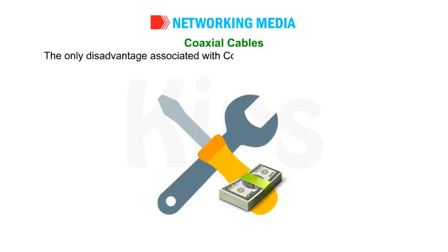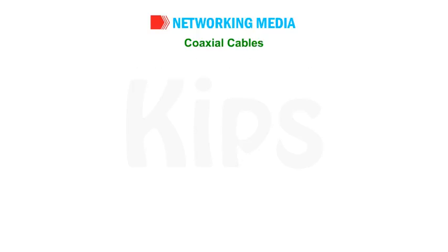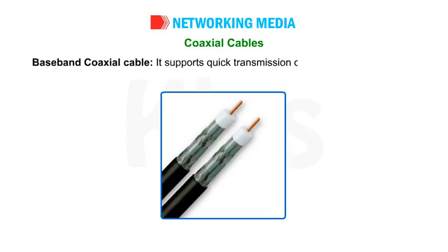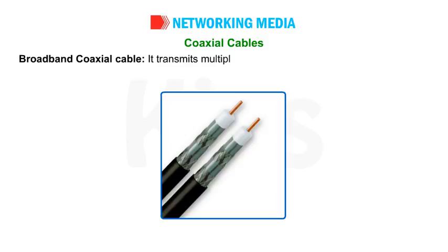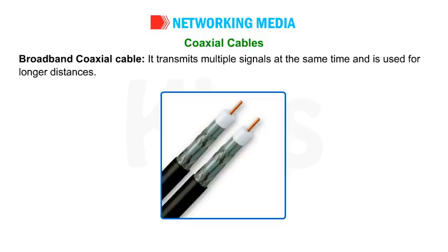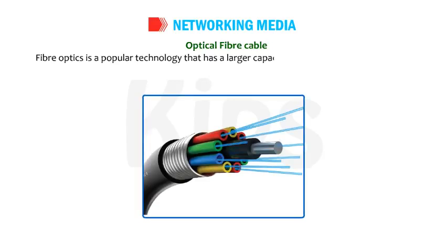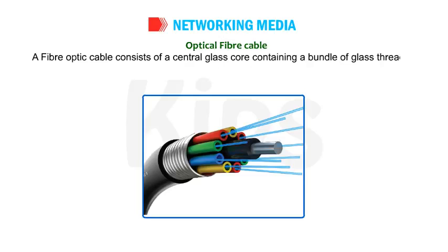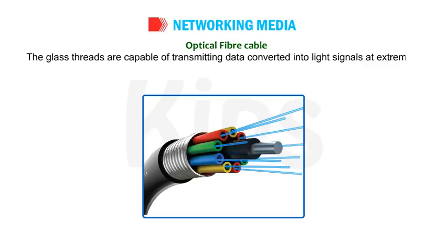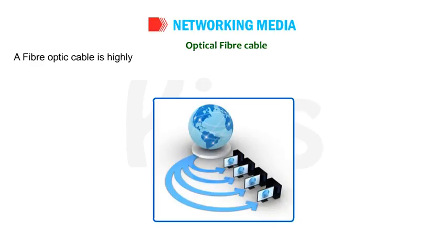The only disadvantage associated with coaxial cable is its high installation and maintenance cost. The two main types of coaxial cable are: Baseband coaxial cable, which supports quick transmission of a single signal at a time; and Broadband coaxial cable, which transmits multiple signals at the same time and is used for longer distances. Optical Fiber Cable: Fiber optics is a popular technology that has a larger capacity to transfer data at a very high speed. A fiber optic cable consists of a central glass core containing a bundle of glass threads surrounded by several layers of protective materials.